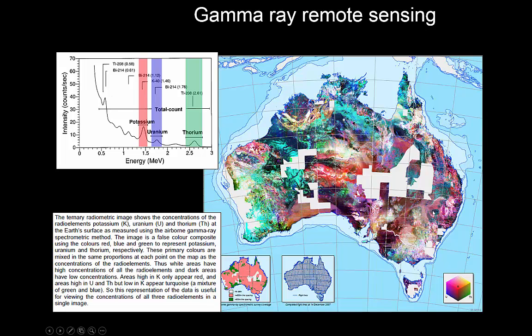From this mosaic of airborne gamma ray measurements put together by Geoscience Australia, you can see how different rocks and mineral compositions lead to different combinations of potassium, uranium, and thorium emission spectra from those three elements. You can already see that some clear features stand out, and this is useful for geological mapping — and you don't have vegetation to worry about.